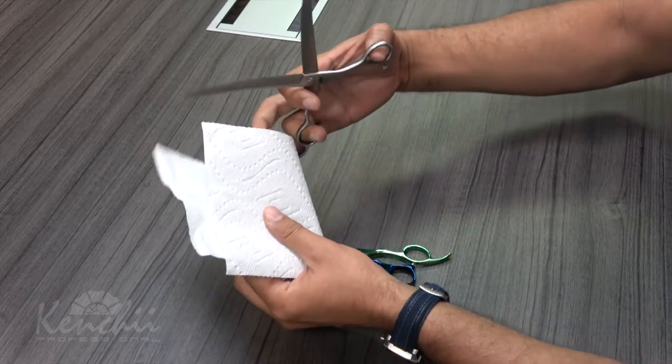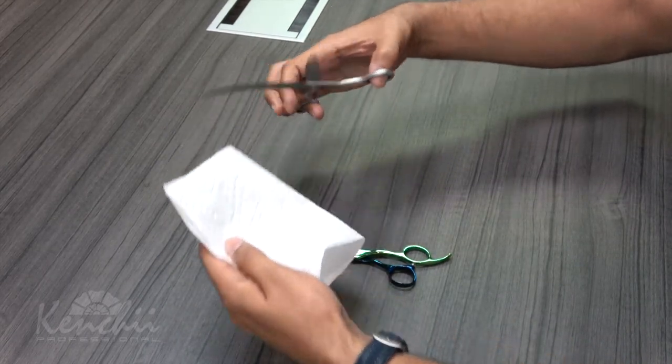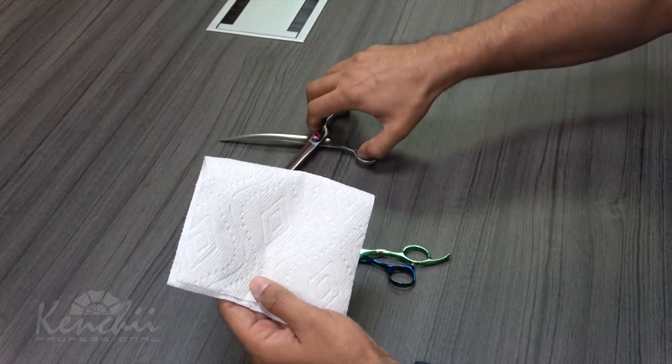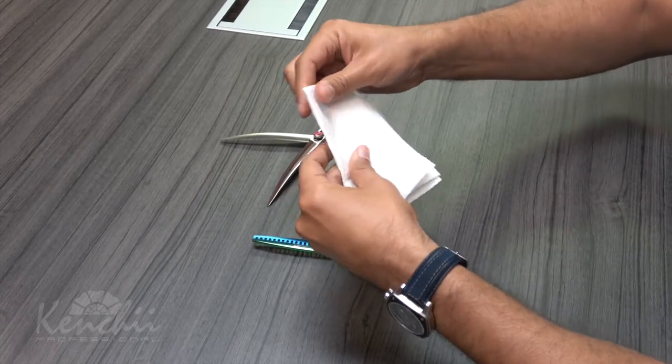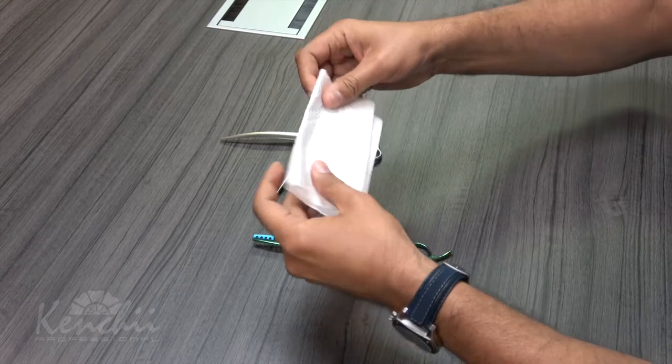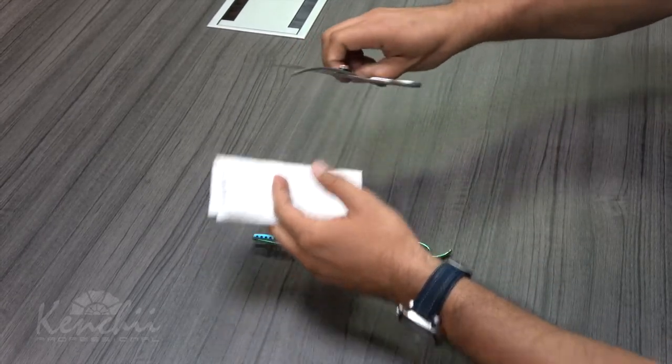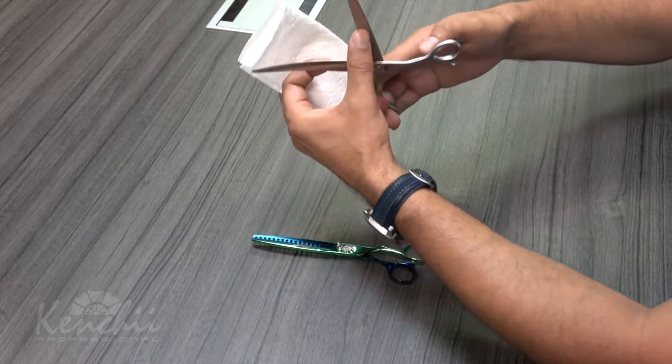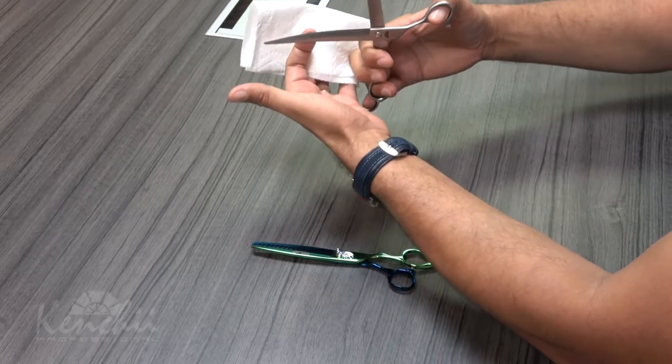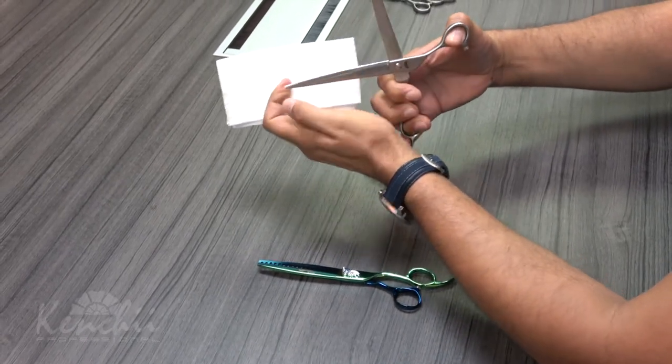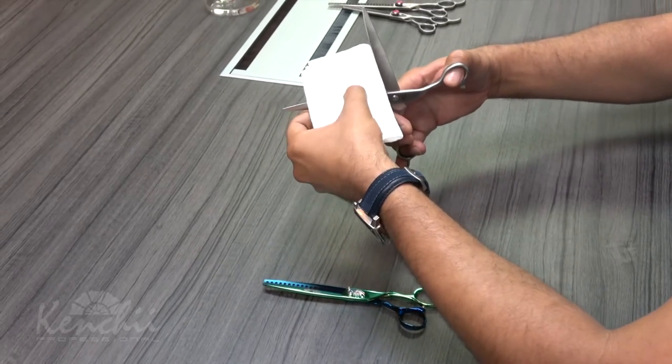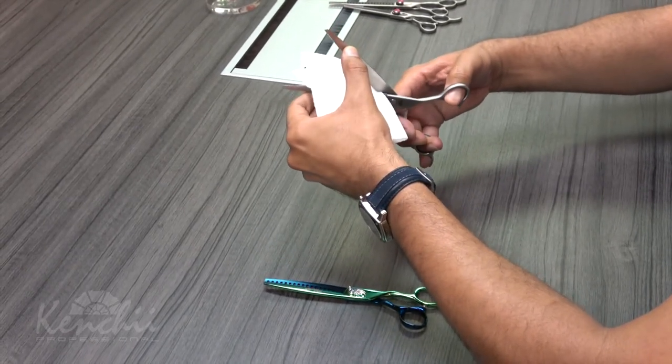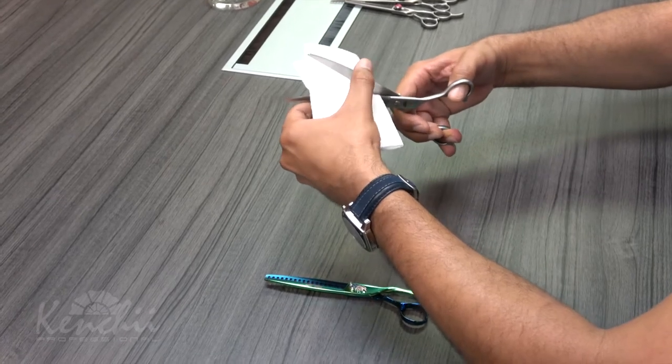So what you want to do is you're going to take a paper towel, leave your shears alone. Do not close them yet. Fold it a couple times. And what you're going to do is you're going to push the blades apart. So you're going to pull here and push it with your thumb. And at the same time, you're going to put the paper towel in between and kind of close that slowly.